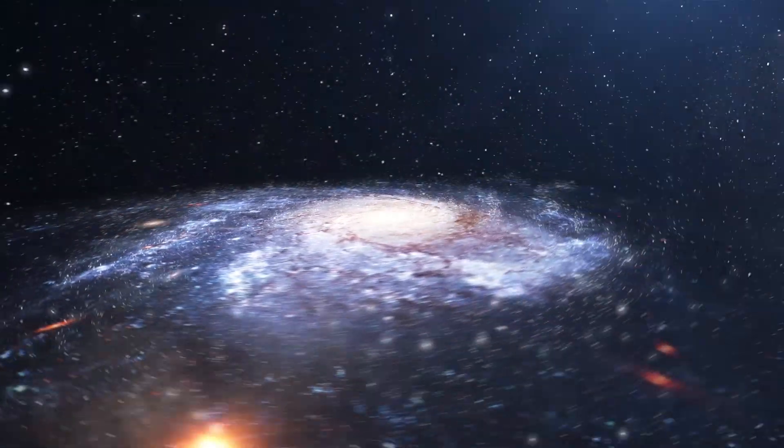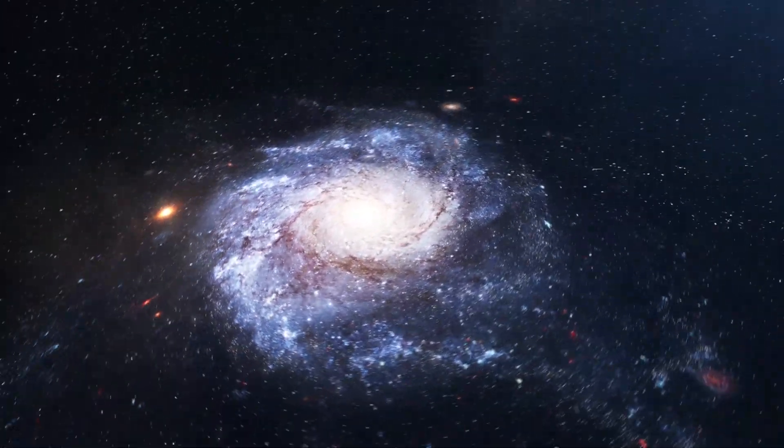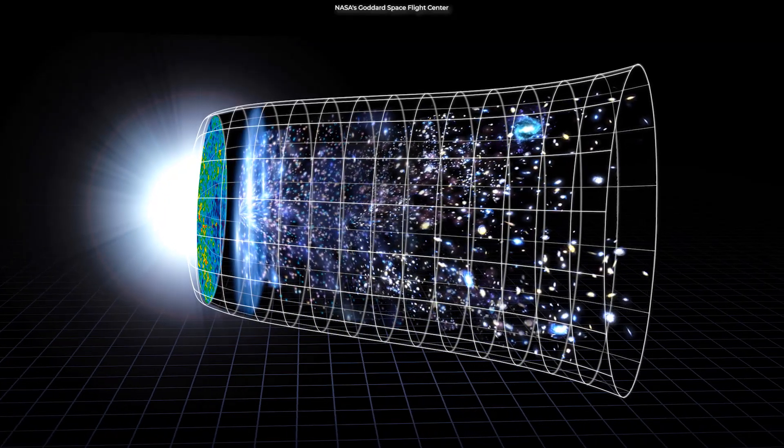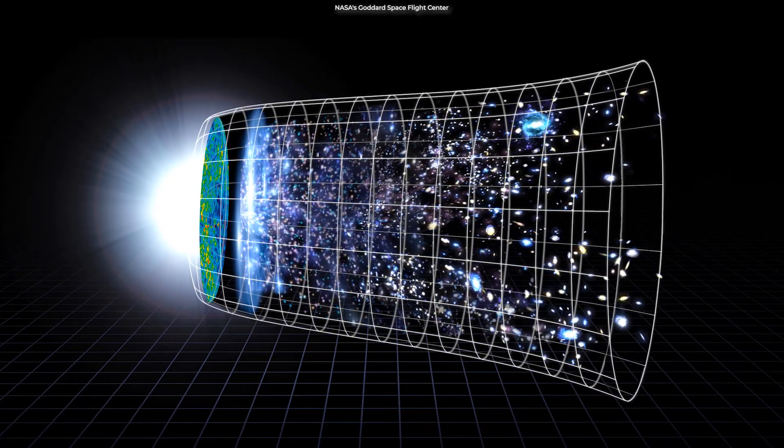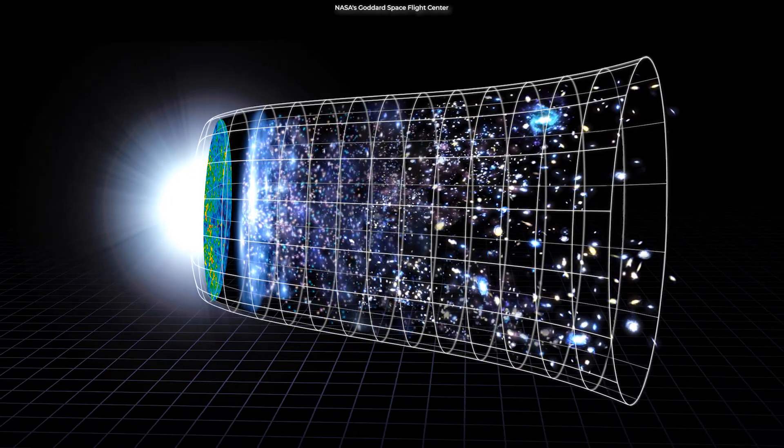Compared to the massive, bright galaxies of today, the first objects were very small, and due to the constant expansion of the universe, they are now tens of billions of light years away from Earth.